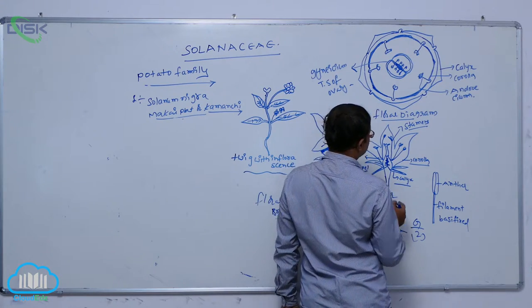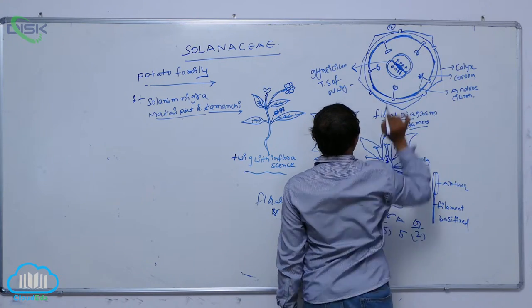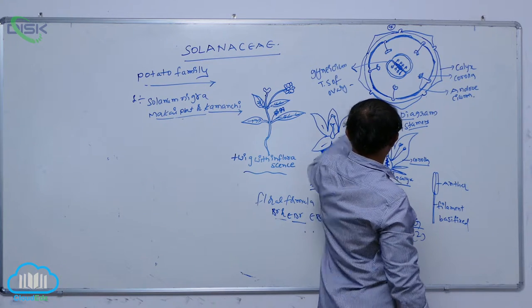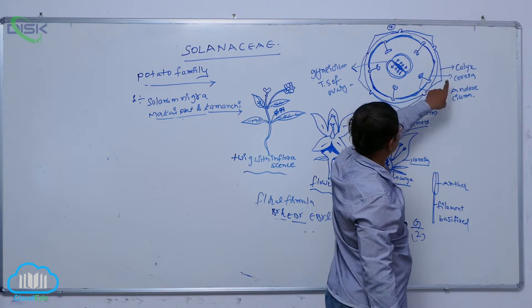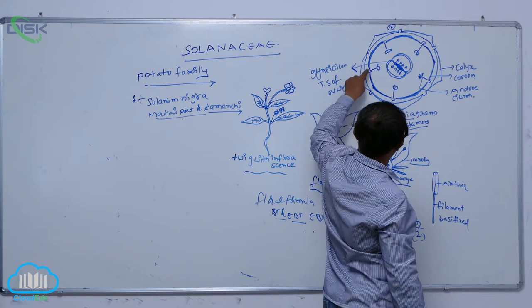So after that, in that floral diagram, it is indicated that mother axis, bracts are present or absent. Generally, first floral is that calyx. It is a whorl of sepals. Sepals are five. Fused condition. After then, petals.